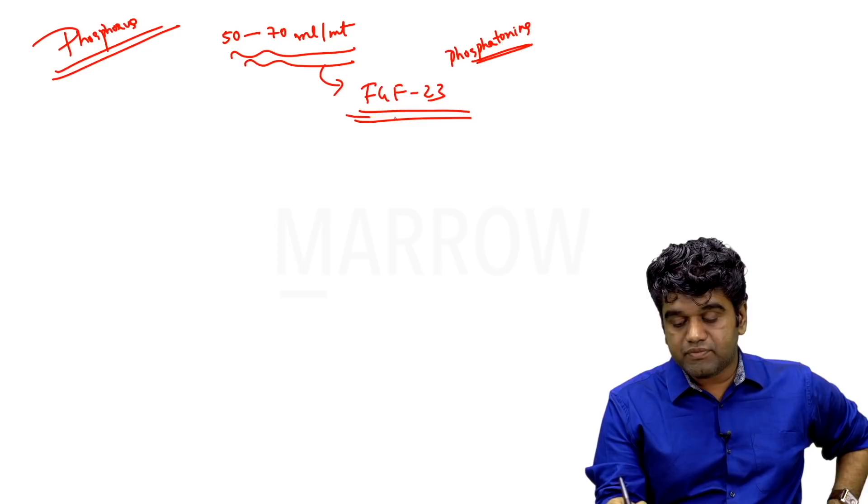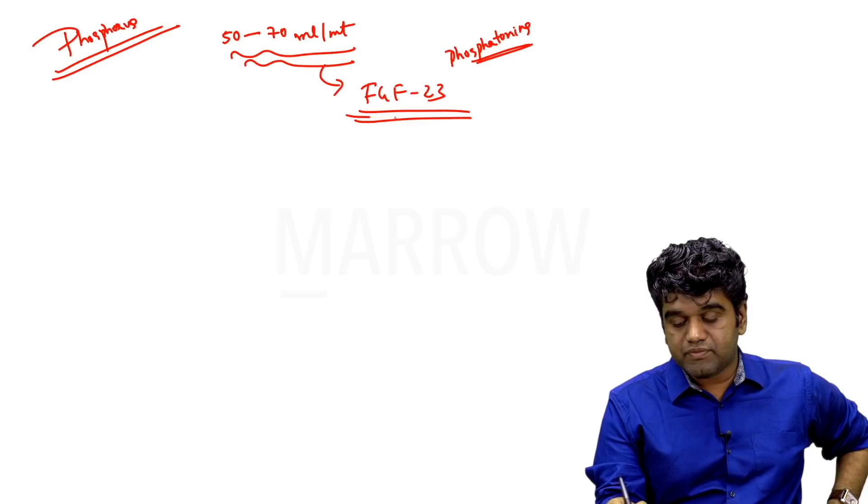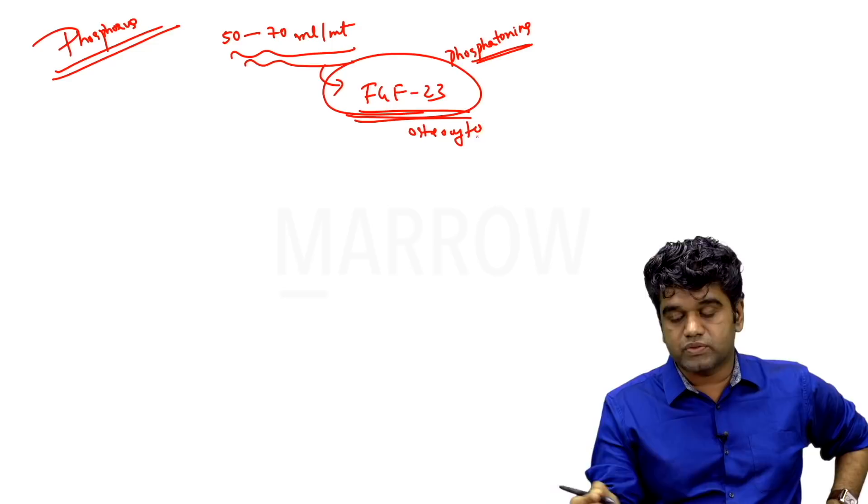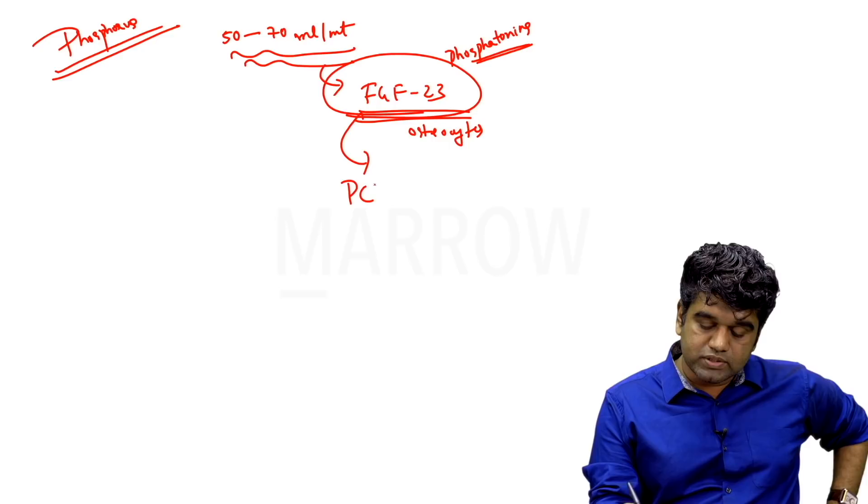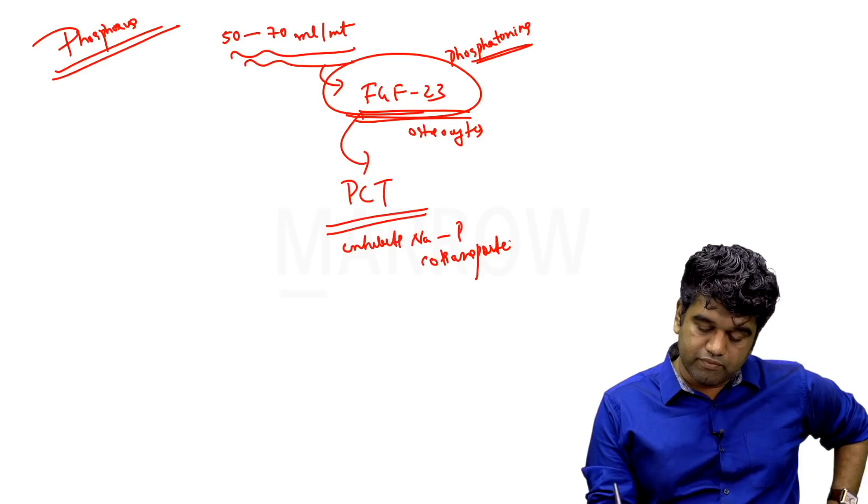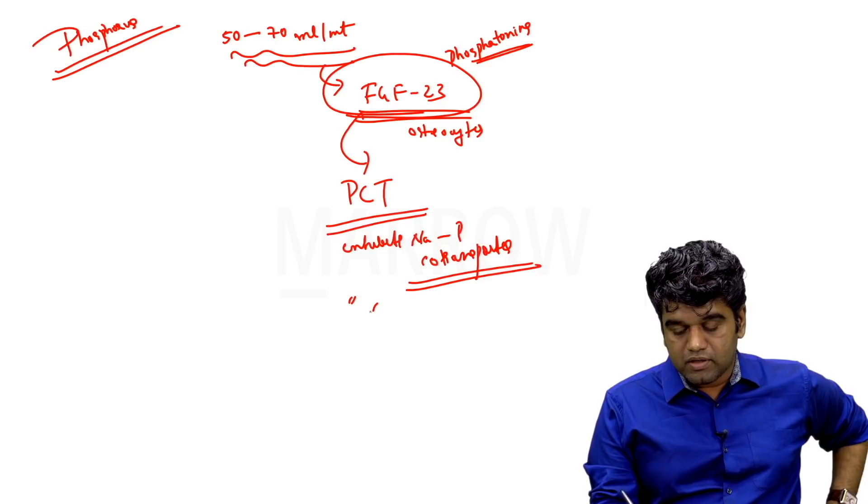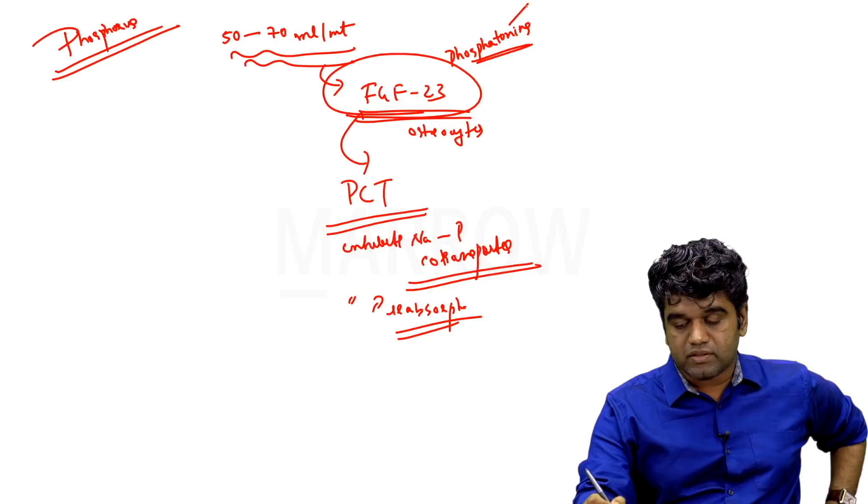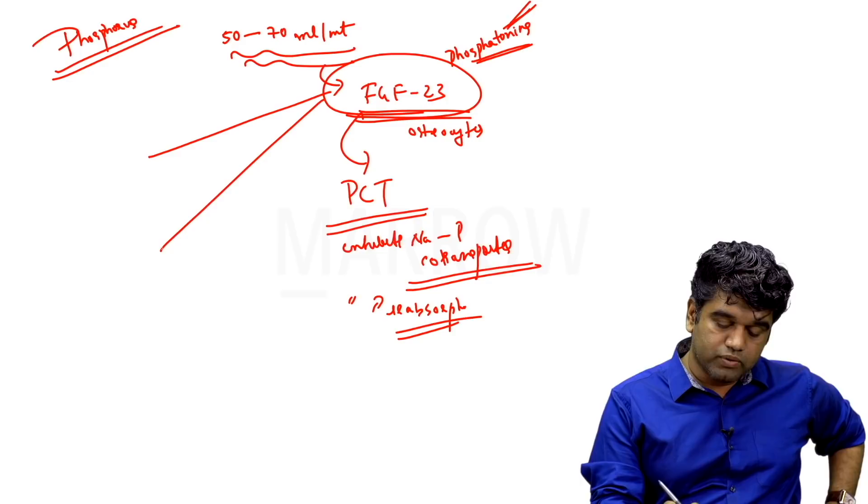FGF-23 comes under this class of molecules called phosphatonins, which are phosphorus excretors. FGF-23 is the molecule that is being produced by osteocytes. As and when the GFR is around 50 to 70 ml per minute, FGF-23 acts on the proximal convoluted tubule and it inhibits what is called sodium phosphorus co-transporter. When it inhibits sodium phosphorus co-transporter, it basically inhibits phosphorus reabsorption. That is why it is called as a phosphatonin or a phosphaturic substance.